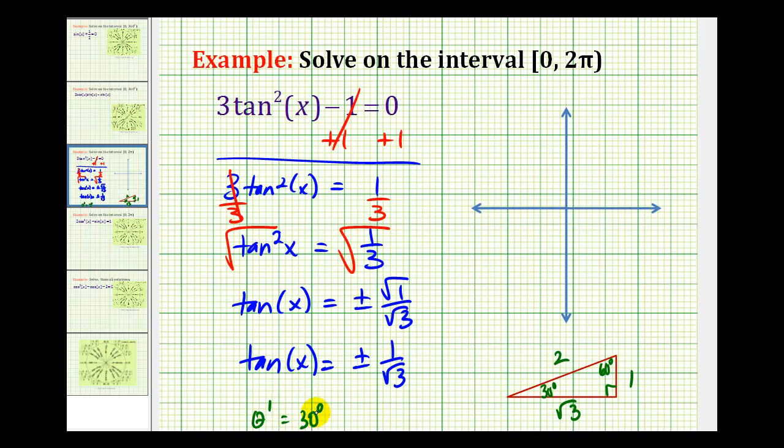So we can use this reference angle to determine the angles that have a tangent function value of plus or minus 1 over square root of 3. And since this function value can be both positive or negative, we're going to sketch a 30 degree reference angle in each quadrant. There's the one in the first quadrant, there's the one in the second quadrant, third quadrant, and fourth quadrant.